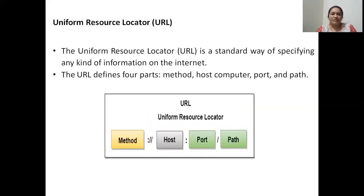Now let us understand what is a Uniform Resource Locator. The URL is a standard way of specifying any kind of information on the internet. Each web page will be identified by a unique URL, or Uniform Resource Locator. The URL will contain four parts: method, host computer, port, and path.